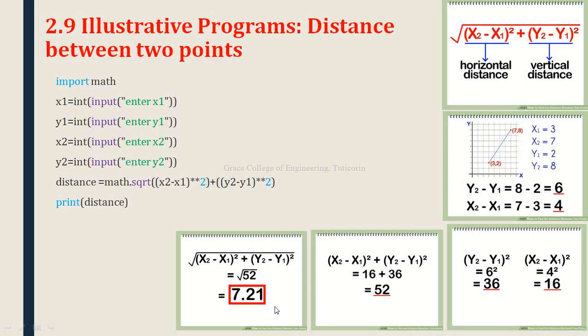This was the last topic in the second unit — Data Expressions and Statements — specifically topic 2.9, Illustrative Programs: Distance Between Two Points, for GE8151 Problem Solving and Python Programming. We have now completed the second unit. I hope you have understood. Thank you.